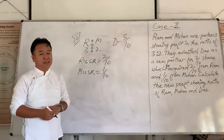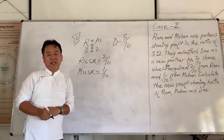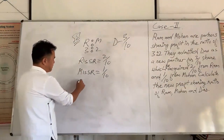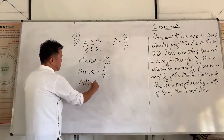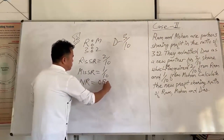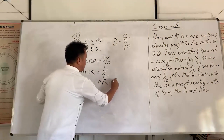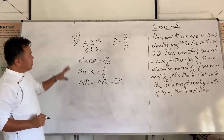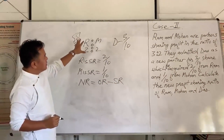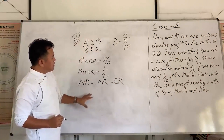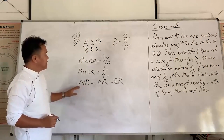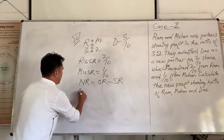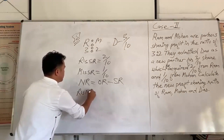Since we have the value of the sacrifice ratio of all partners, we can apply the formula of new ratio, which is: new ratio equals old ratio minus sacrificing ratio.